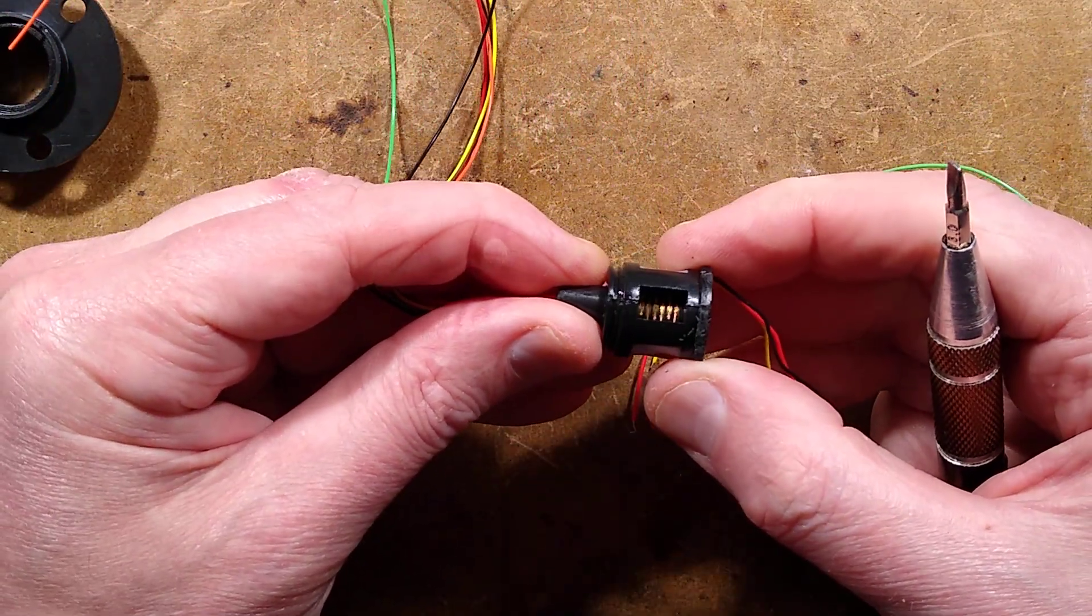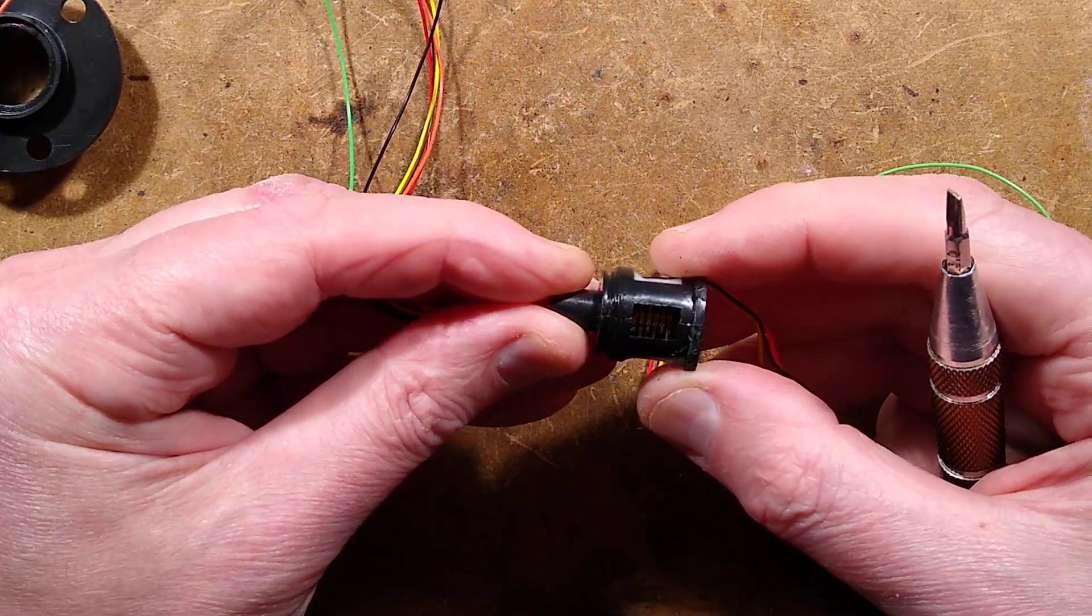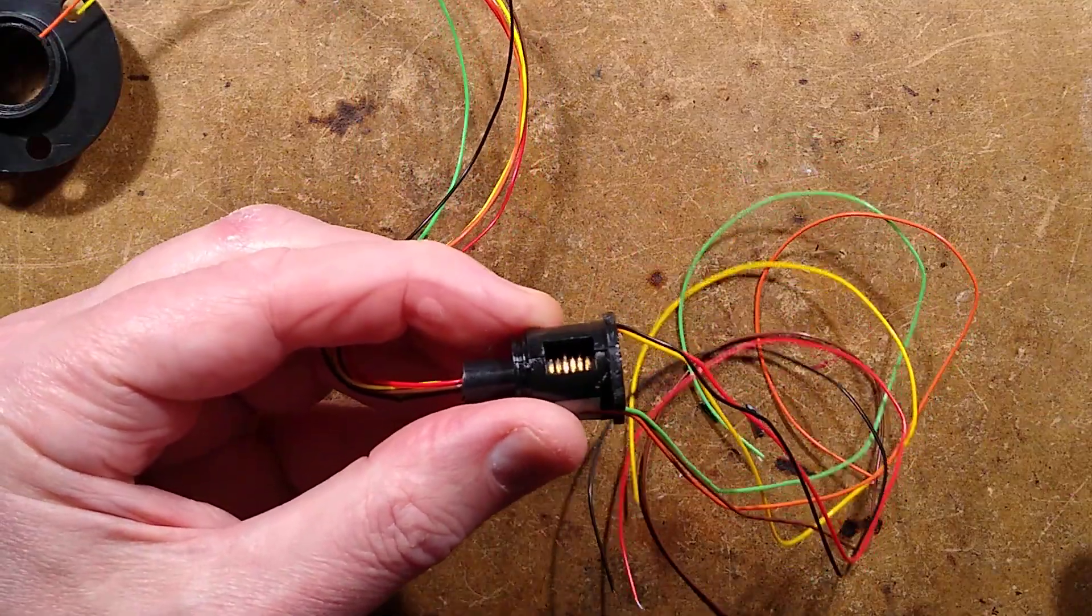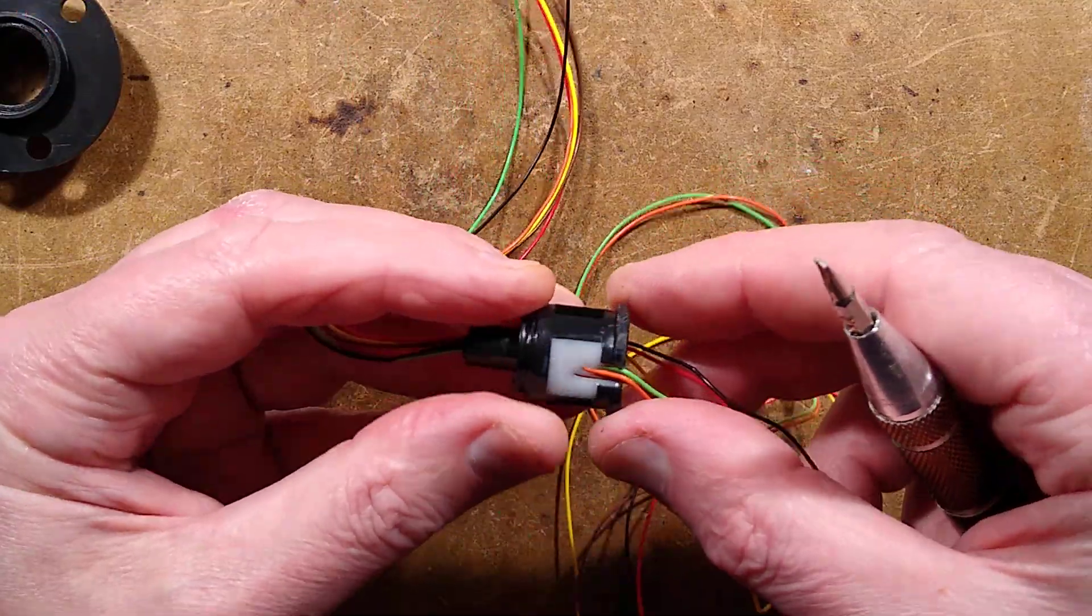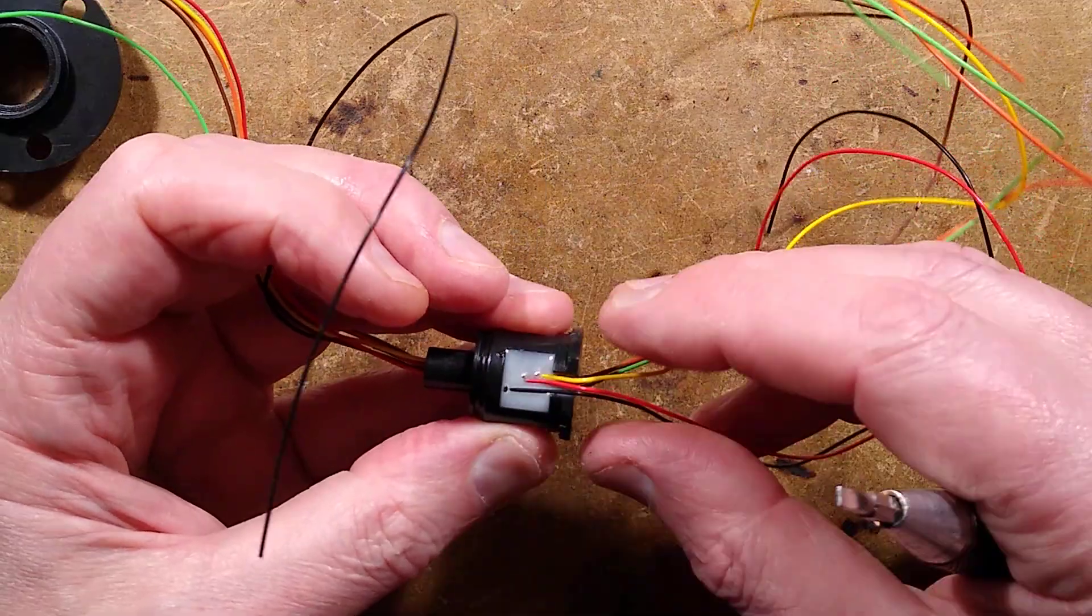What have we got here? I can see the little gold contacts in there. Can you see them? Oh, this is potted in with resin. And this one.